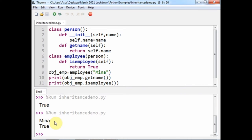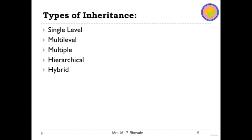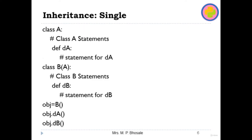Now let's move to the PPT and see various types of inheritance in Python. There are single-level, multi-level, multiple, hierarchical, and hybrid types. Single-level means one parent class and one child class where the child inherits the properties of the parent. Class A is a parent class and class B is a child class inheriting A. You create the object of the child class and can call any method from either class.